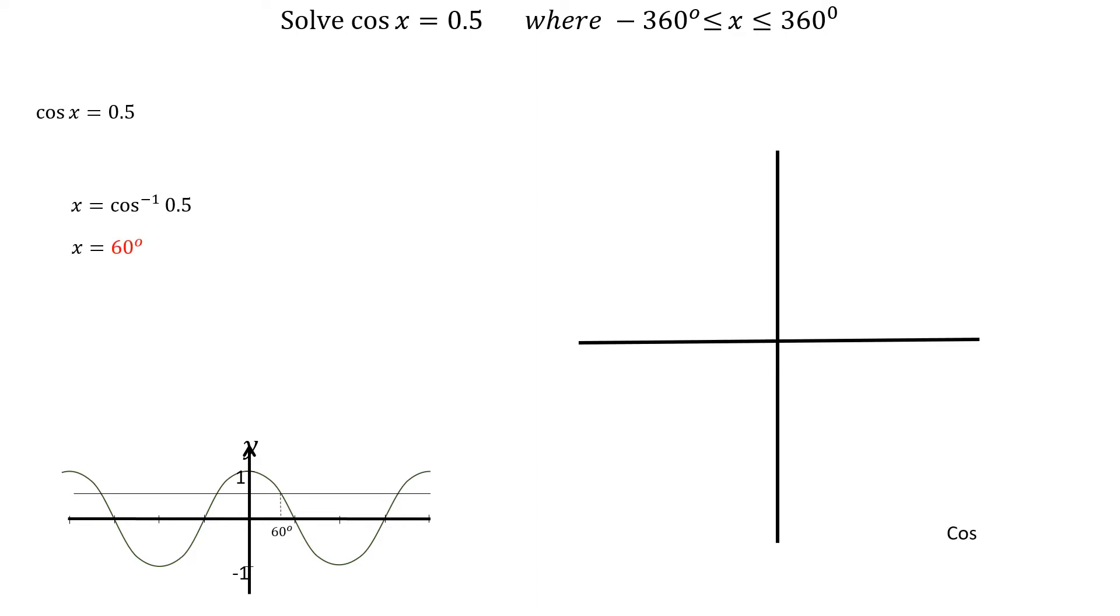Cos is positive in the first and fourth quadrants, so we show 60 degrees from the horizontal in these two quadrants.